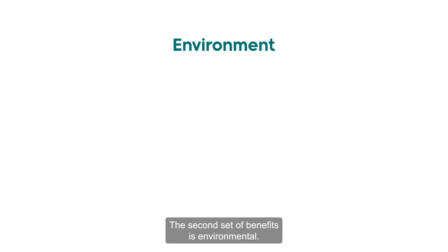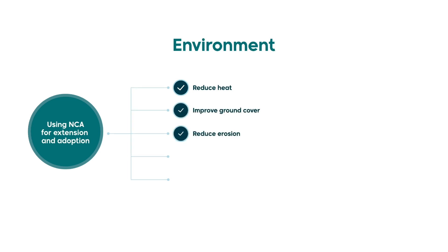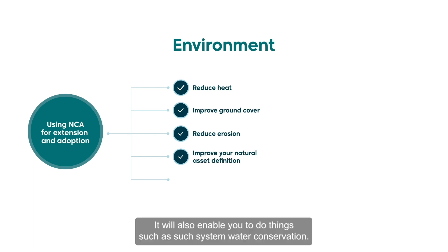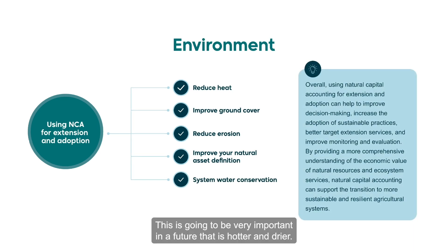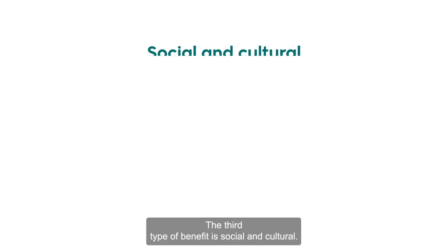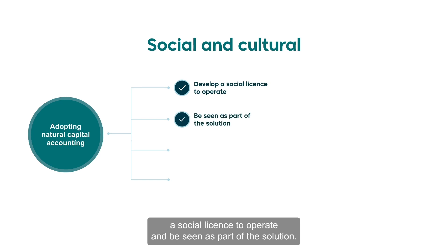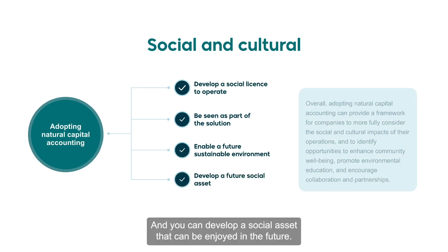The second set of benefits is environmental. By using natural capital accounting for extension and adoption, you can look to reduce heat, improve ground cover, reduce erosion and improve your natural asset definition and maintenance. It will also enable system water conservation, which is going to be very important in a future which is hotter and drier. The third type of benefit is social and cultural. By adopting natural capital accounting, you are able to develop a social licence to operate and be seen as part of the solution. You can enable a sustainable environment of the future for yourself and for your successors, and develop a social asset that can be enjoyed in the future.